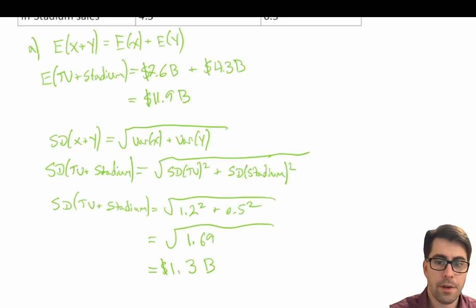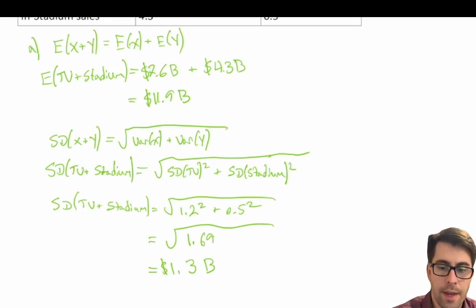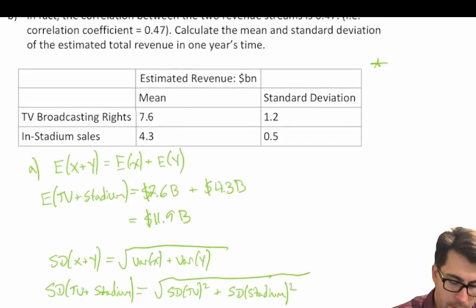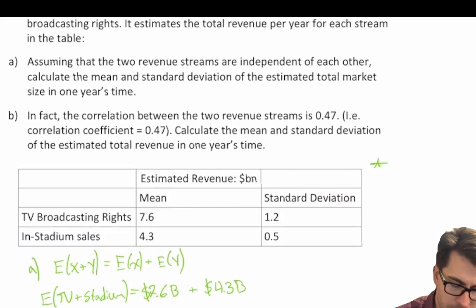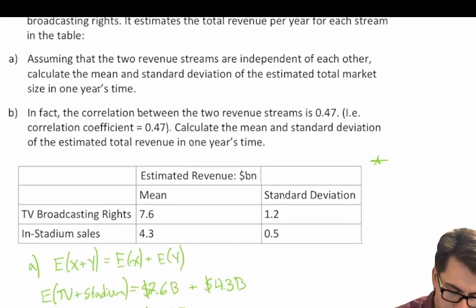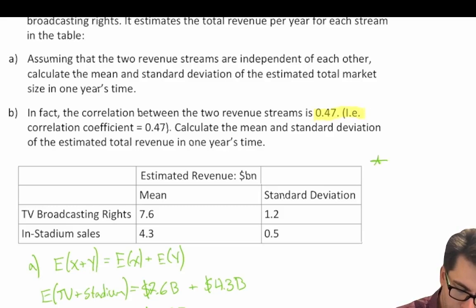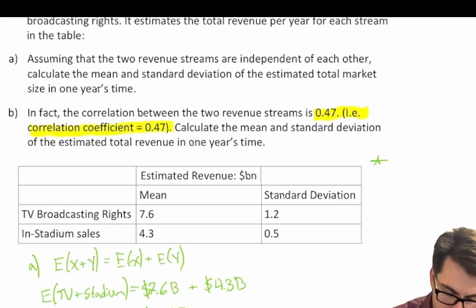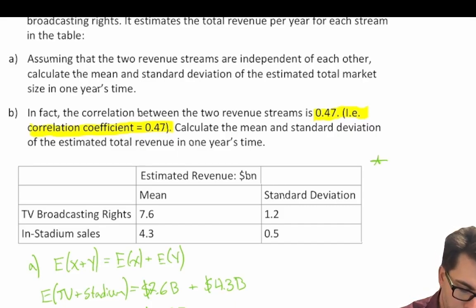Now let's address part B. Part B says that in fact the correlation between the two revenue streams is 0.47 — that is, a correlation coefficient of 0.47. Calculate the mean and standard deviation of the estimated total revenue in one year's time.